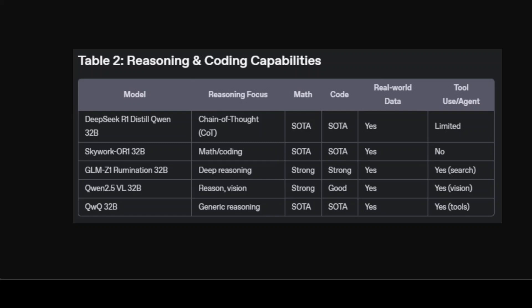QWQ 32 billion with thinking is a general reasoning beast, competitive with bigger closed models for hard tasks — we have seen this running it locally, and I even ran it on CPU. If you are confused about which model to run, QWQ is normally a safe bet in this model family. AI is at the bleeding edge — it is changing every day, maybe every hour — so what I am telling you right now might not be valid next week or next month, but as of now these are the models for these tasks.